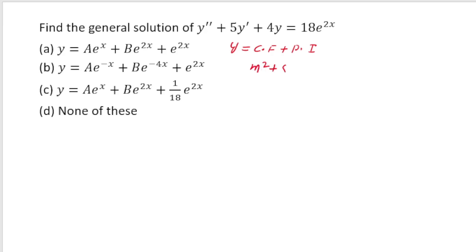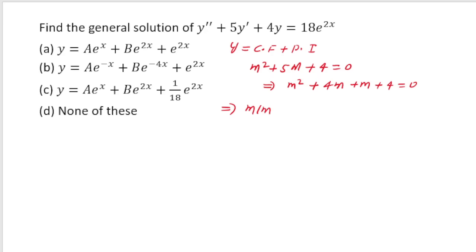So y equals CF plus PI. To write the CF we write the auxiliary equation: m² + 5m + 4 = 0. This factorizes as m² + 4m + m + 4 = 0, giving m(m+4) + 1(m+4) = 0, so the roots are m = -4 and m = -1.